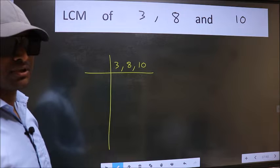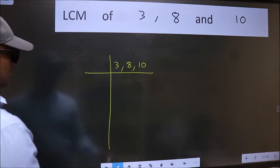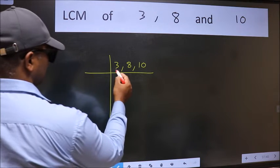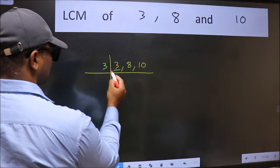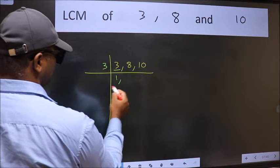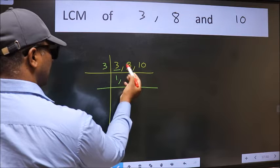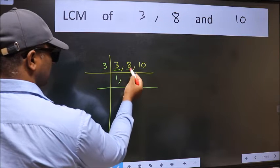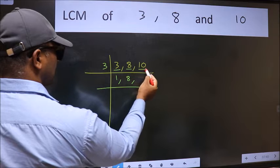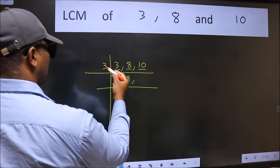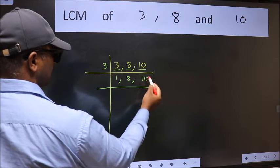Now we should focus on the first number which is 3 here. 3 is a prime number, so 3 divides 3 once. The other number 8 is not divisible by 3, so we write it down as it is. The other number 10 is not divisible by 3, so we write it down as it is.